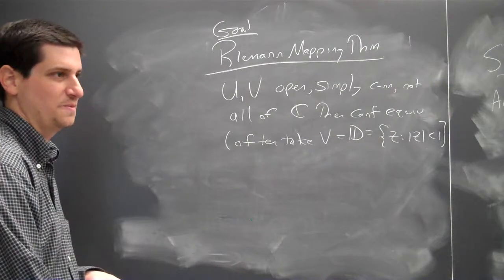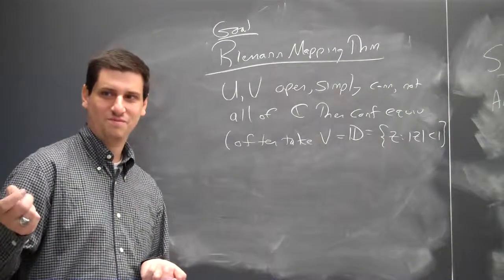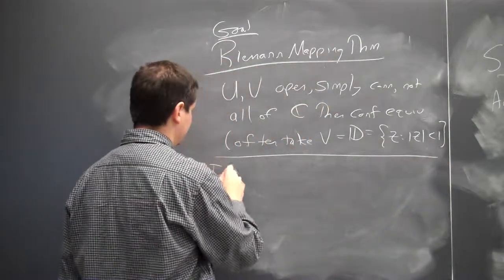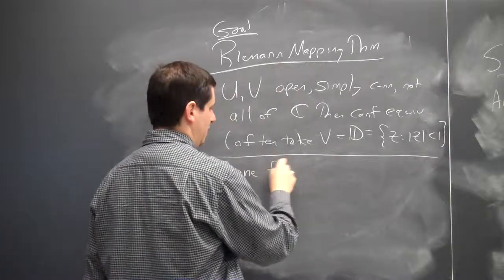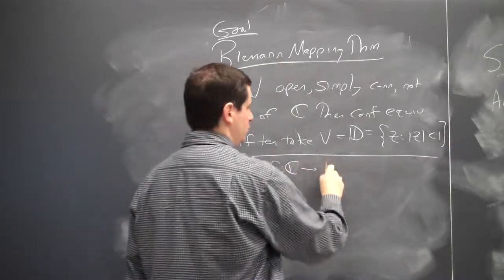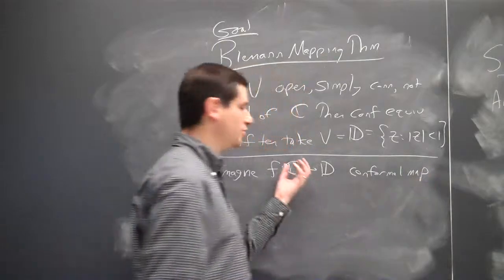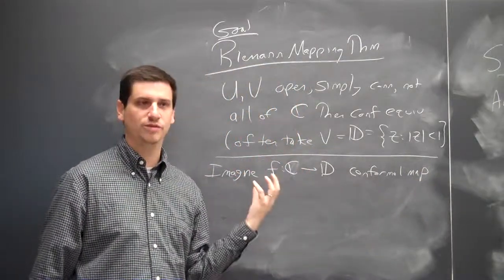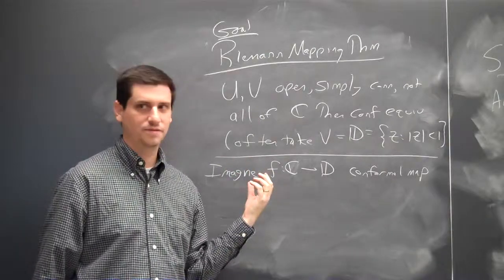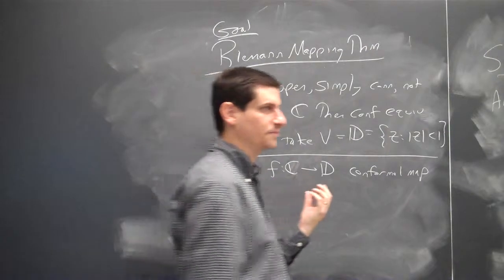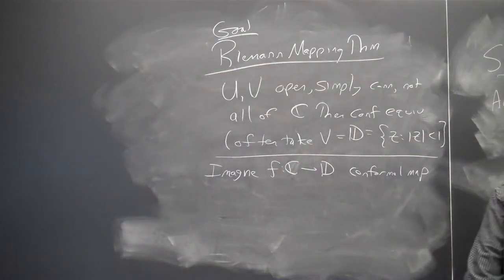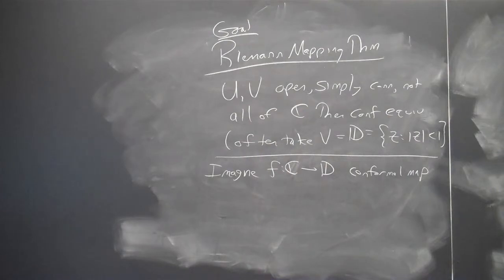Whenever you see a theorem with conditions, your first thought should be: remove them. What happens if I remove a condition? In general, two things typically happen — the proof is either much harder in general, or it fails. So let's remove some conditions. What's a good condition to remove? Not all of C. Imagine F from C to the unit disc is a conformal map — so the whole complex plane and the unit disc are conformally equivalent. Can somebody give me a contradiction? Why is this bad?